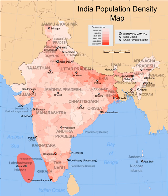Life expectancy at birth: total population 68.8 years; male 67.6 years; female 70.1 years, 2017 estimate. Total fertility rate: 2.43, 2017 estimate.